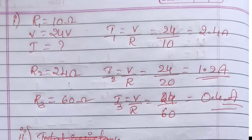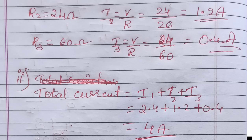And R2, I2 equals V divided by R, 24 divided by 20, so the answer is 1.2 amps. R3 equals 60 ohm. Therefore I3 equals V by R equals 24 divided by 60, therefore 0.4 amps. We got I1, I2, I3. They asked total current. So what happens? I1 plus I2 plus I3 equals 4 amps.